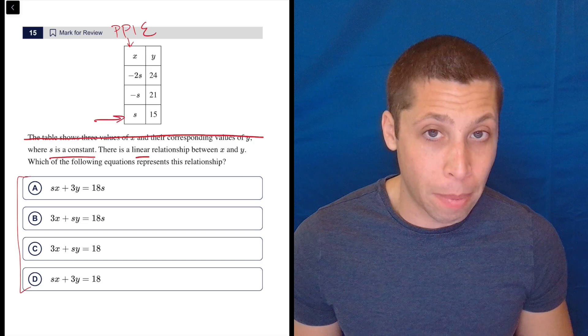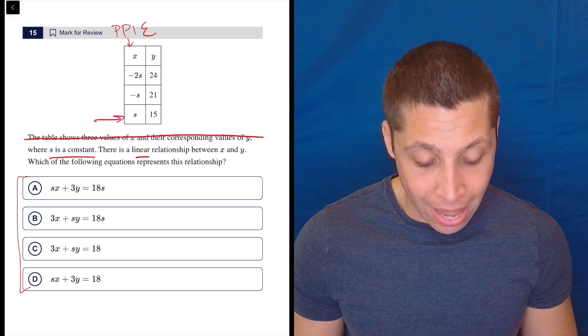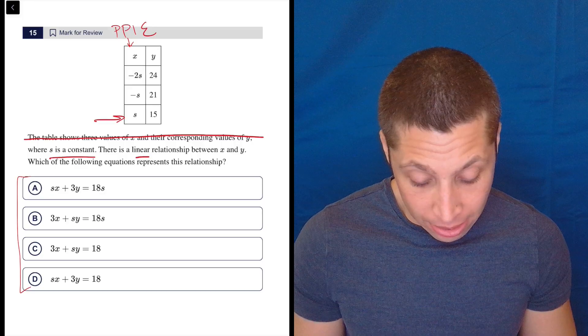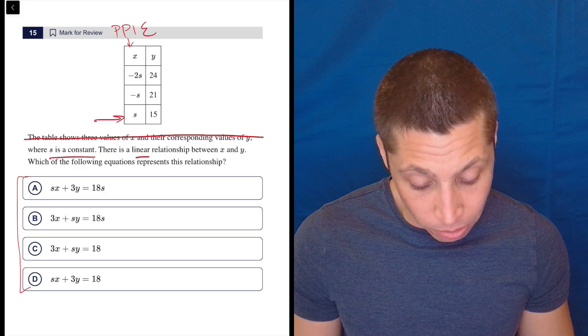Pick a value that's kind of easy to think about. So, how about s and 15? And s is my x value and 15 is my y value. So, let's just put it in.